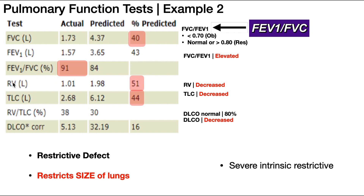We can confirm that by looking at the residual volume and total lung capacity. A restrictive defect restricts the size of the lungs, so the lungs are actually going to be smaller. If we look at the percent predicted residual volume and total lung capacity — the two major lung parameters affected by a restrictive defect — you can see they're well less than 100%, drastically lowered. This really confirms our hypothesis that it is restrictive.